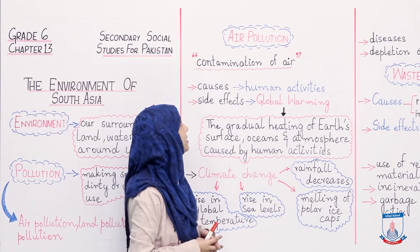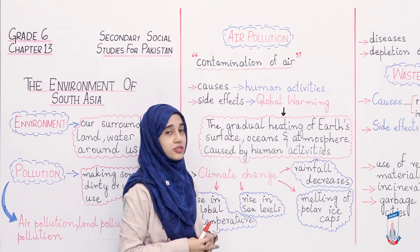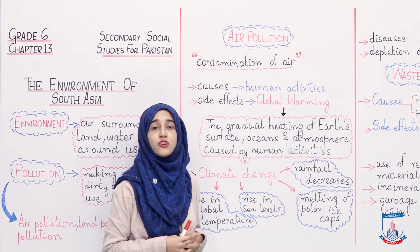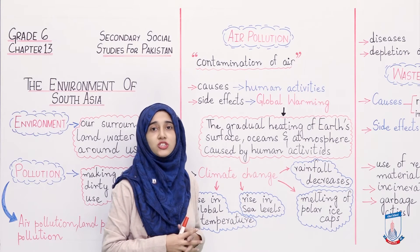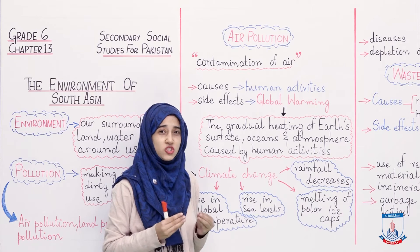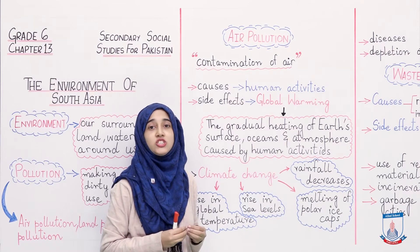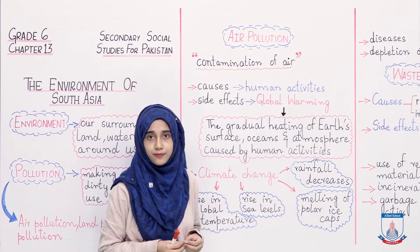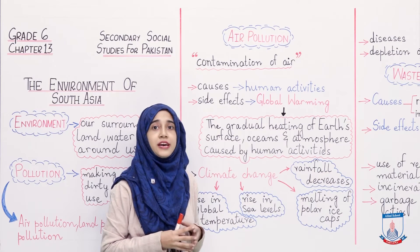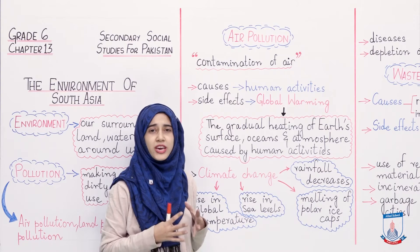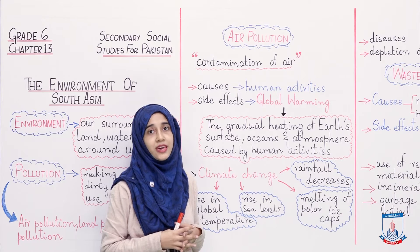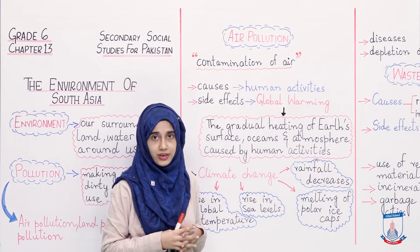First, let us talk about air pollution. What is air pollution? Air pollution is contamination of air. Contamination means making something dirty or spoiled. So air pollution means if our air becomes dirty, becomes bad, that is not fit for inhaling — then we call that contamination of air.